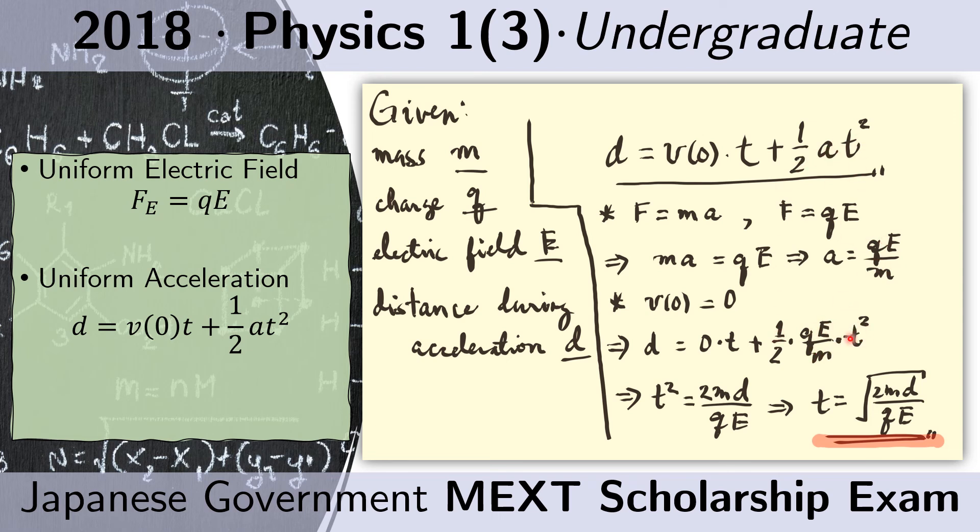And we just clean this a little bit. We get this. Then we get the square root to get that T that we're looking for. So this is our answer.